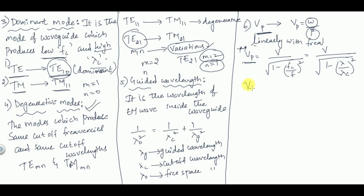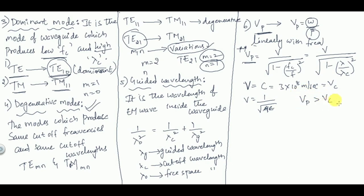In free space, v equals c, which is 3×10⁸ m/s, given by v = 1/√(με). If we denote the velocity of light as vc, then since the formula gives vp = vc divided by something less than one, vp is always greater than vc — the phase velocity inside the waveguide exceeds the speed of light.